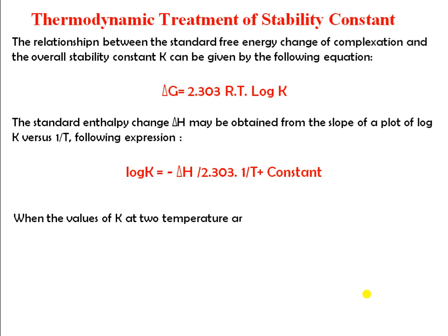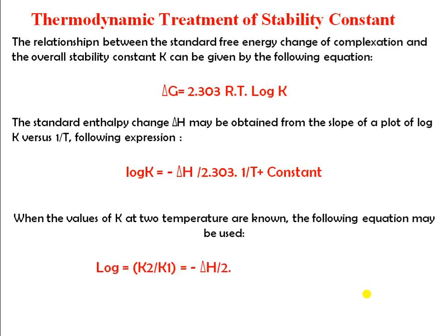When values of K at two temperatures are known, the following equation may be used: log(K₂/K₁) = −ΔH / 2.303R × (T₂ − T₁) / (T₁ × T₂). This means if you take the value of K at two different temperatures, your equation will be modified accordingly.